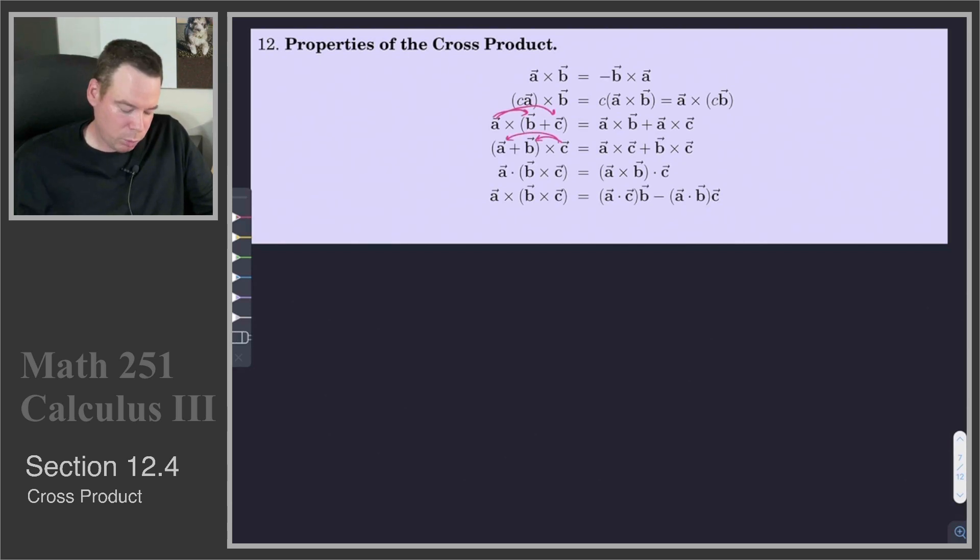And the final two properties, the second last one, talks about how the dot product can be mixed together with the cross product. So when I take a cross product, B cross C, that produces another vector. And that vector I can dot with A. That produces a scalar.